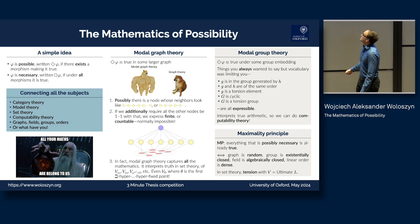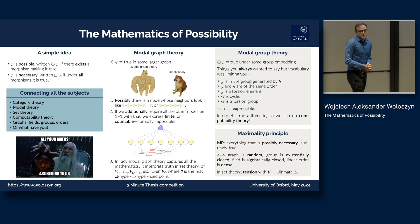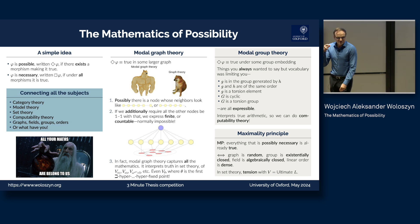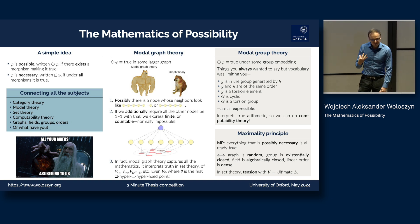The last thing I want to tell you about is the maximality principle, which is an axiom schema that says everything that is possibly necessary is already true. Not every structure satisfies it, but if it does, it's probably very important. As you can see, fields are algebraically closed. There is a generalization in set theory that connects the missing axiom of set theory with the stronger maximality principle.